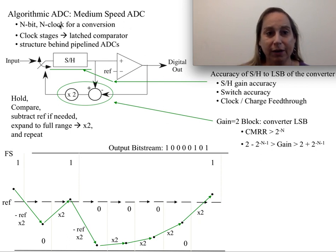It requires, like any medium-speed converter, typically N clocks to do an N-bit conversion. If you need a four-bit conversion you'll have four stages, ten bits will be ten clock stages, and so on. Since it's clocked, you're typically using latch comparators because there's no advantage not to.